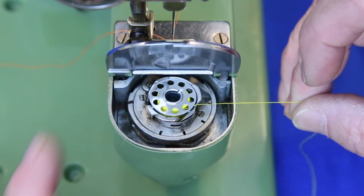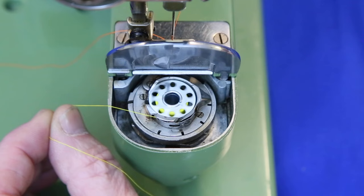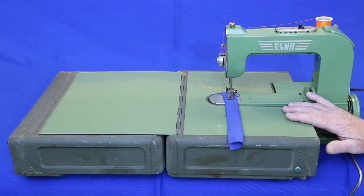Place the bobbin in the holder so that the thread is coming off counterclockwise. Slide the thread over so it catches under that finger and pull it over until it snaps down there.